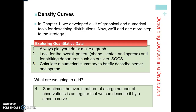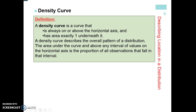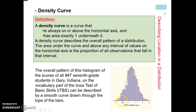In the past we just looked at histograms. Sometimes the overall pattern of large numbers of observations is so regular that we can describe it by a smooth curve. Rather than just having a broken-up histogram, we're going to look at what it looks like if you draw a nice smooth curve on top of it and shade it in. That is going to be called a density curve — it's basically like taking your histogram, drawing a curve on top, filling in the area, and looking at all the area underneath the curve.